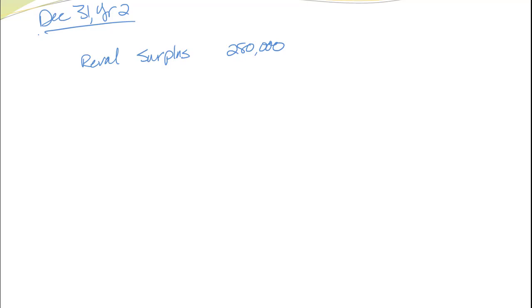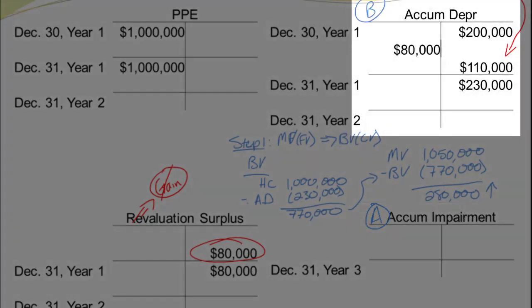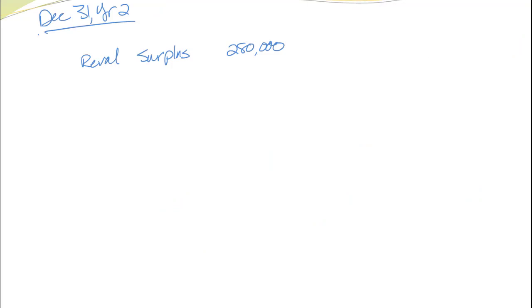The next question is where does the debit go? We go through a specific order for recording the increase in value. First, we use up any accumulated impairment — we don't have any. Next, I use up accumulated depreciation, but I only have $230,000, not $280,000, so I can debit accumulated depreciation for $230,000 taking it to zero. Anything more than that goes into PP&E, so I debit property, plant, and equipment by $50,000.